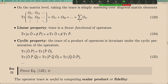Trace has a wonderful property: operators don't commute, but if you put a trace around the result, the two orderings always give equal numbers. Even though OP ≠ PO as matrices, Tr(OP) = Tr(PO). That's amazing.